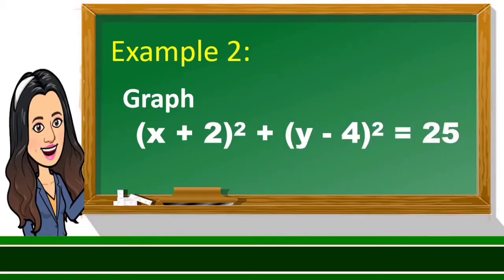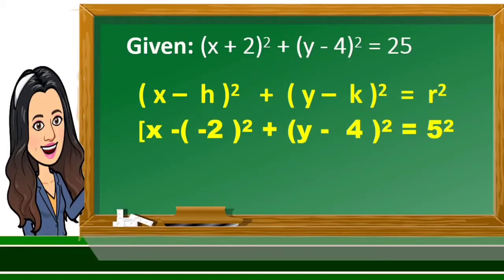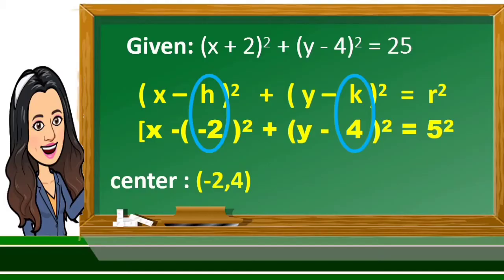Example 2: graph the square of the quantity x plus 2 plus the square of the quantity y minus 4 is equal to 25. Rewrite the equation in standard form. The center is at point (−2, 4) and the radius is 5 units.